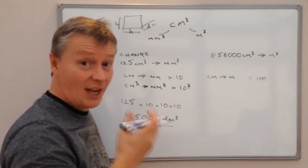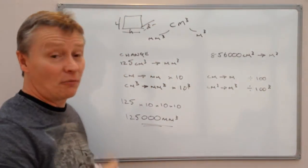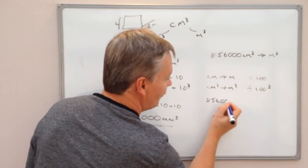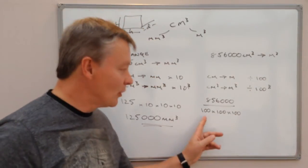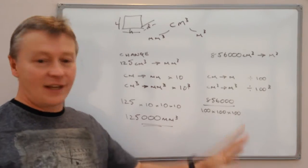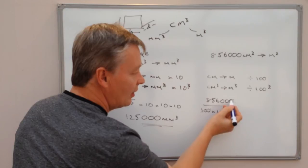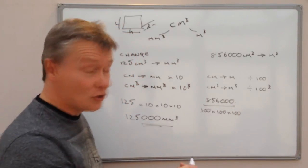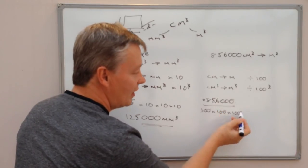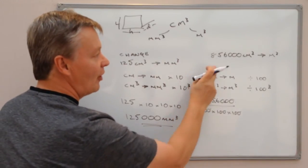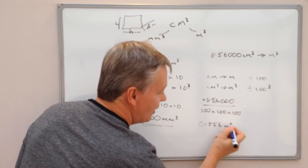But because we're using a volume measurement, centimeters cubed to meters cubed means we divide by 100 cubed. So I write that as 856,000 divided by 100 cubed, which is 100 times 100 times 100 — that's 1,000,000. I divide top and bottom step by step: dividing by 100 moves the decimal point twice, then again twice, then again twice — so the answer is 0.856 meters cubed.